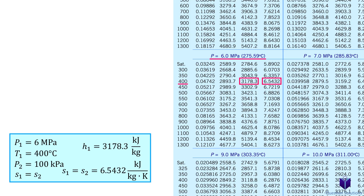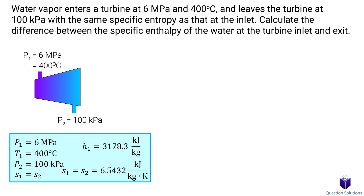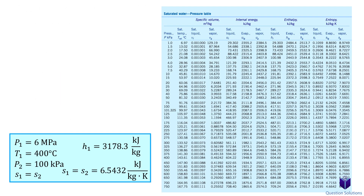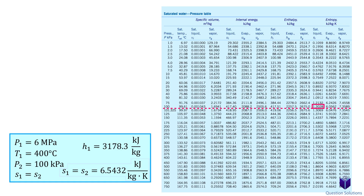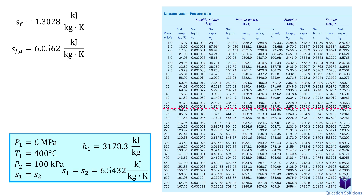Keep in mind that this specific entropy is the same at the inlet and outlet. Now we need to figure out the final enthalpy by checking whether the superheated vapor remains superheated at the outlet. Looking at a water pressure table at 100 kPa, notice that the entropy value we have is greater than the saturated liquid entropy but less than the saturated vapor entropy — that means the water is now a mixture. Let's write down the saturated liquid entropy, the evaporation entropy, the saturated liquid enthalpy, and the evaporation enthalpy — we'll need those to figure out quality and final enthalpy.